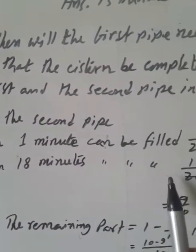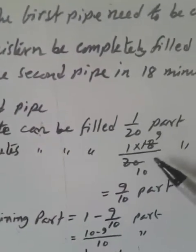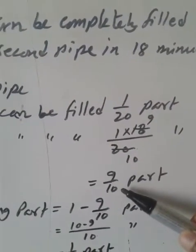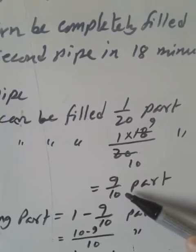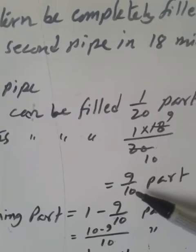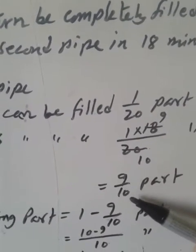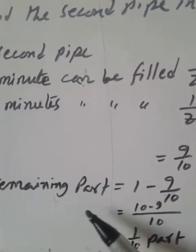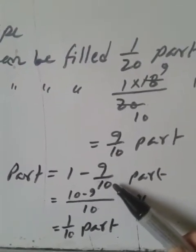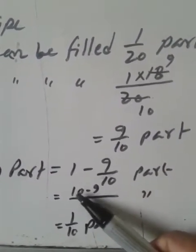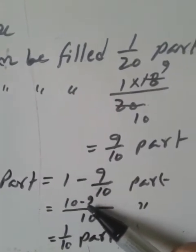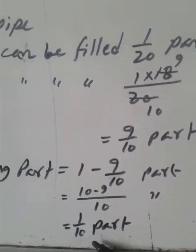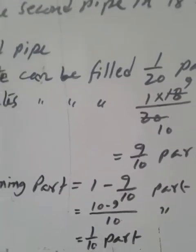The second pipe in 18 minutes can fill 1/20 multiplied by 18, which gives 9/10 part. So if the second pipe is open for 18 minutes, it fills 9/10 part. The remaining part is 1 minus 9/10, which gives 1/10 part. This remaining 1/10 part will be filled by the first pipe.